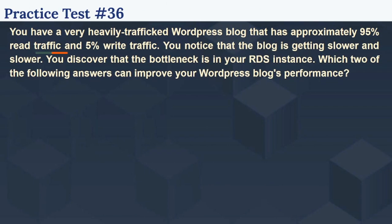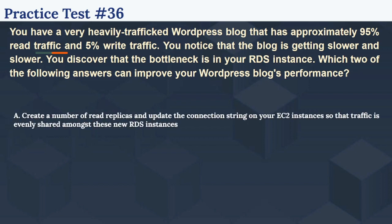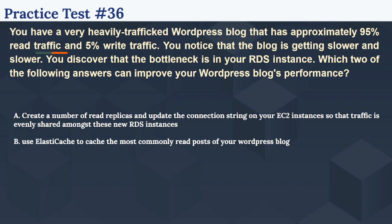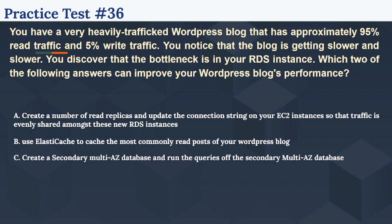So the 36th question is: You have a very heavily trafficked WordPress blog that has approximately 95% read traffic and 5% write traffic. You notice that the blog is getting slower and slower and discover that the bottleneck is in your RDS instance. Which two of the following answers can improve your WordPress blog's performance? Option A: Create a number of read replicas and update the connection string on your EC2 instances so that traffic is evenly shared. Option B: Use ElastiCache to cache the most commonly read posts. Option C: Create a secondary multi-AZ database and run queries against it. Option D: Export the database to DynamoDB which has push-button scalability.